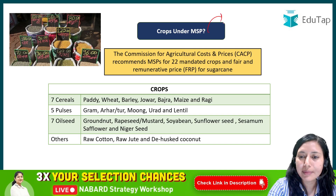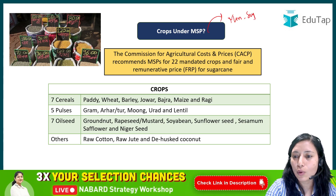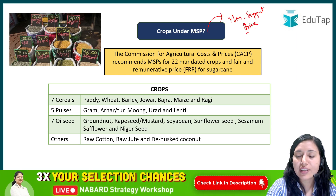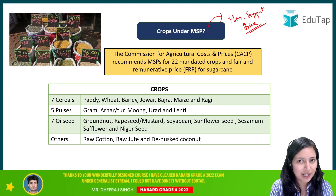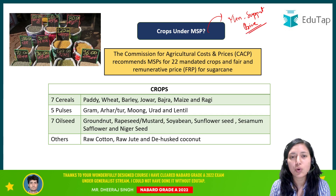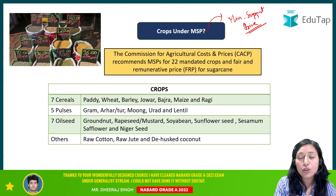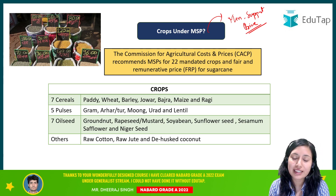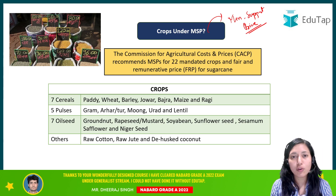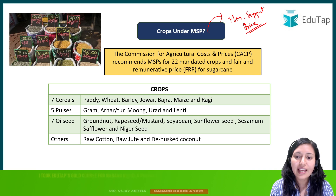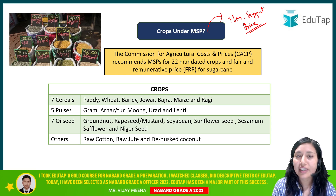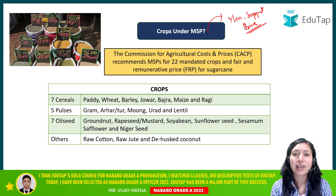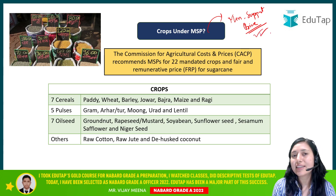First, let me tell you what is MSP. MSP is basically Minimum Support Price. This is the price that is fixed by the government to help farmers — so farmers know that if they are growing a particular crop, what price they will be getting for that crop. This is why MSP is decided by the Government of India for different food crops, to give farmers an idea of what will be the return or income they are getting from a particular crop.